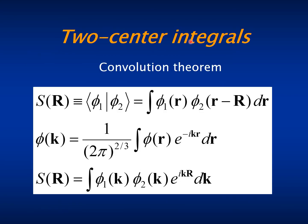The two-center integrals are performed very efficiently using the convolution theorem. Thus, the overlap between two orbitals φ1 and φ2 separated by a distance R.